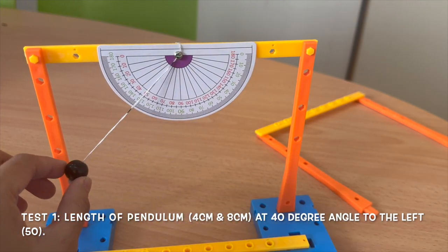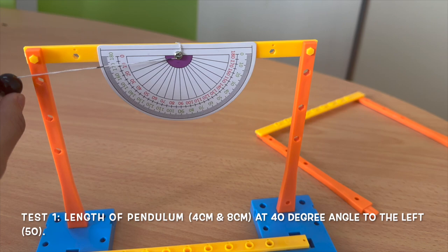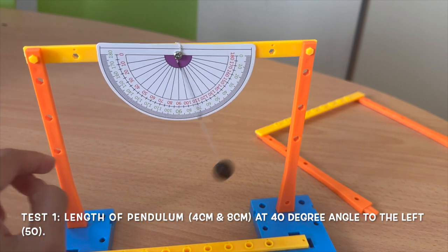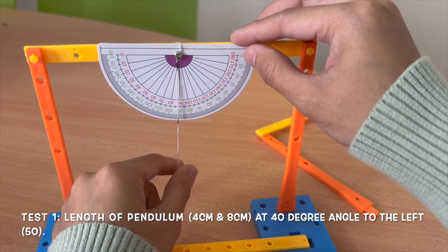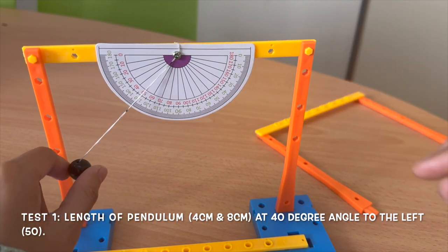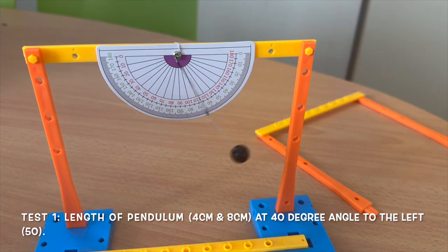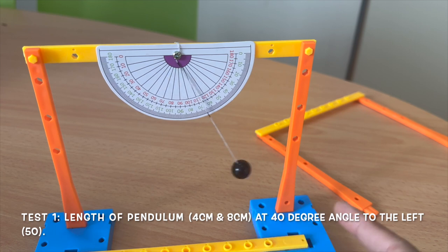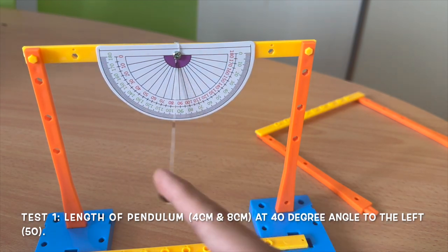The suggested angle is at 50 degree angle because more than 50, it might block the way when you release the pendulum. So we don't want that. Start at 50 and let go of your hand. Record the timing for 10 oscillation.